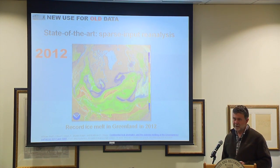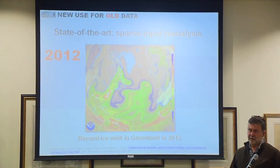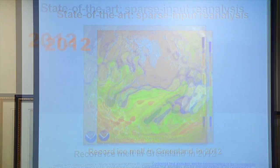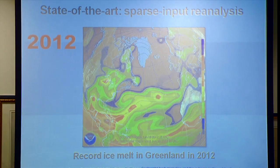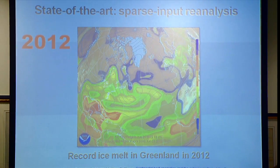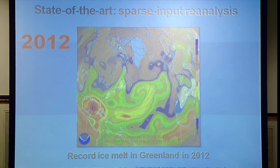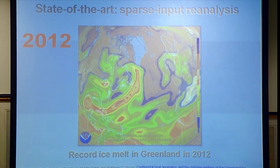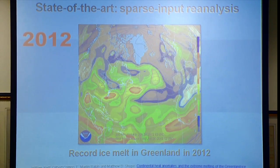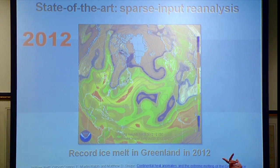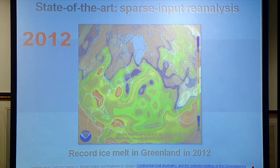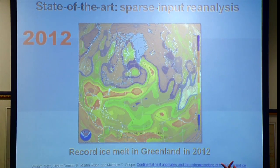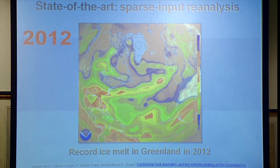This is called sparse input reanalysis - the state-of-the-art in climatology right now for using surface observations. What this shows is the explanation or the cause of the 2012 record melt in Greenland. This paper is actually in press right now and will be coming out in JGR Atmospheres in a month or so.